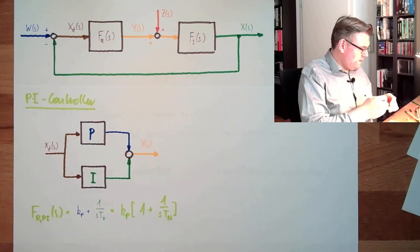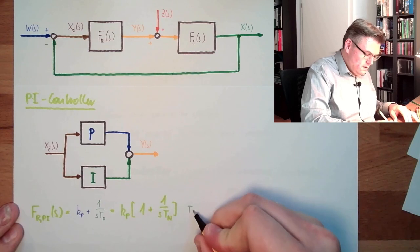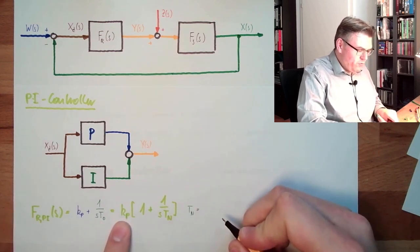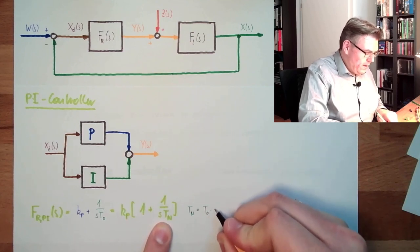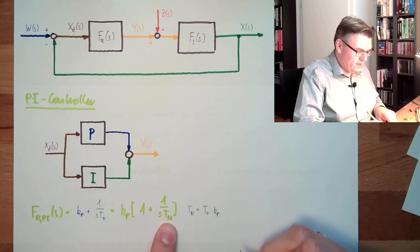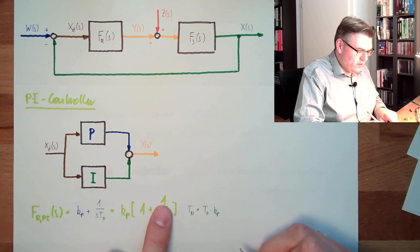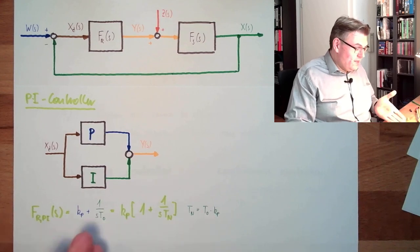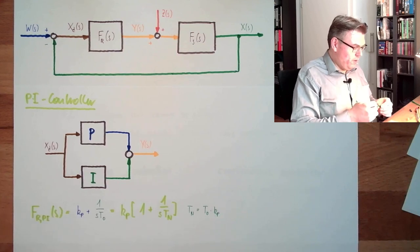This TN equals, of course, if I have to multiply this in, this is TO multiplied by KP. If I set this in, TO multiplied by KP, and if I bring this KP in, then KP is gone and the only thing that is left is TO. So this is actually how it looks like.